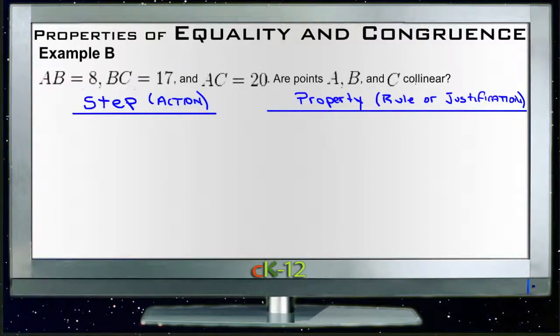Are points A, B, and C collinear? Okay, so the trick here is to remember the rule that says that if you have a line, and on that line you have three points that we'll call A, B, and C here.